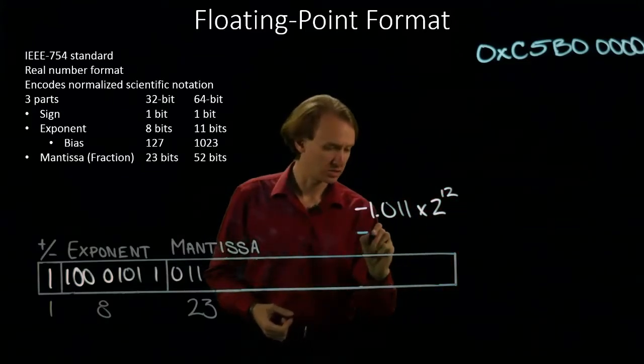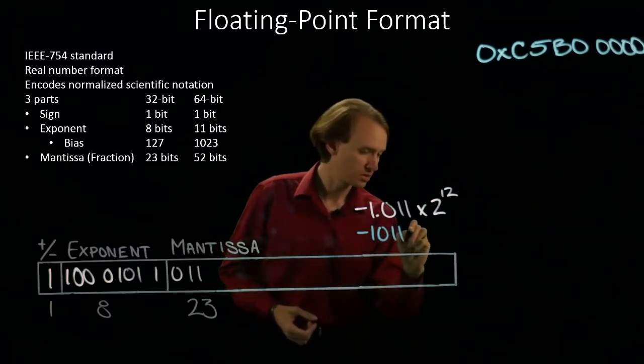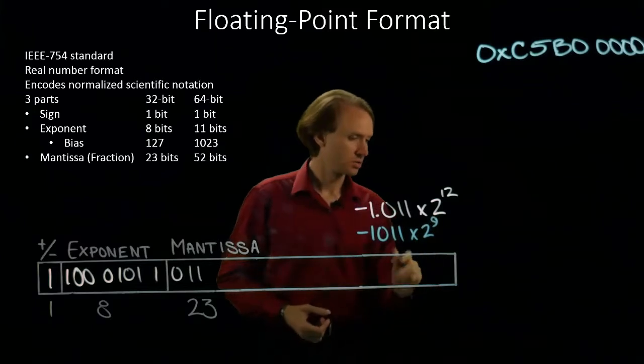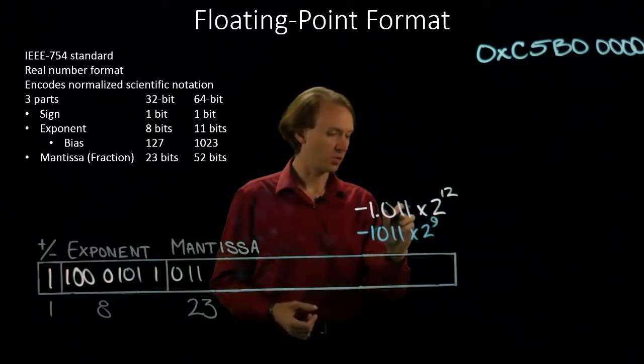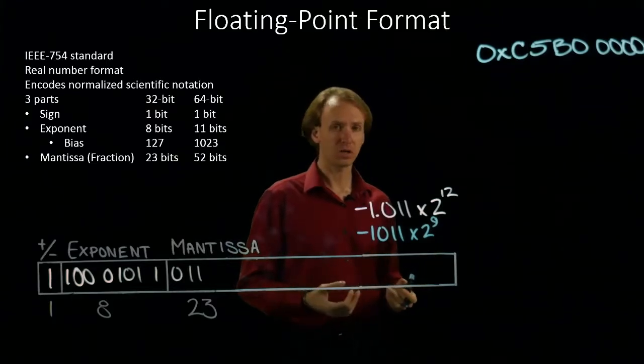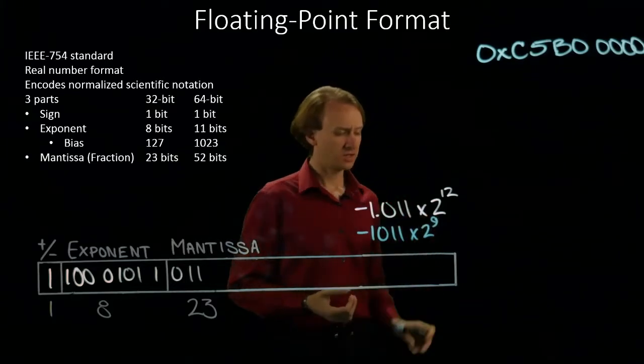I can convert this to -1011 times 2 to the ninth. In this case I've moved my binary point over three places, dropped my exponent accordingly, but I still have the exponent.